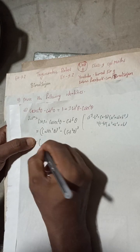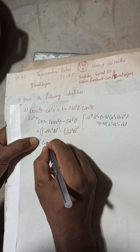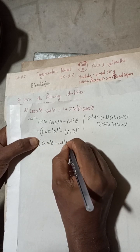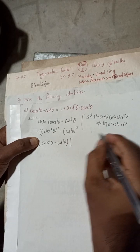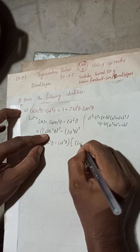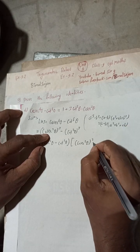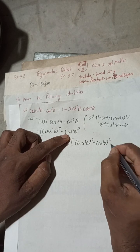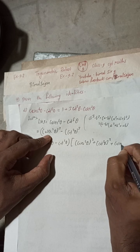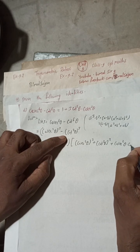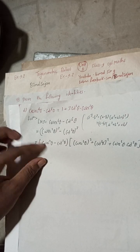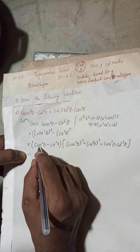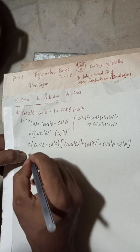Here a is cosec²θ and b is cot²θ. So (a minus b) means cosec²θ minus cot²θ, and a² means cosec²θ whole square, plus b² means cot²θ whole square, plus ab means cosec²θ times cot²θ. Now cosec²θ minus cot²θ equals 1, so this becomes 1.